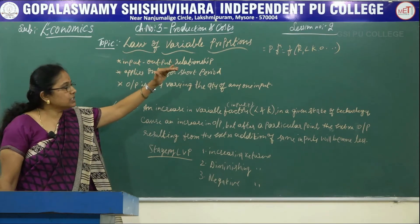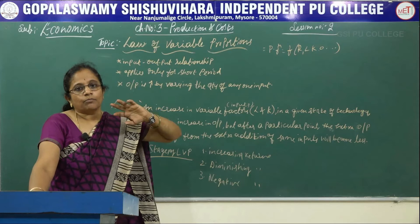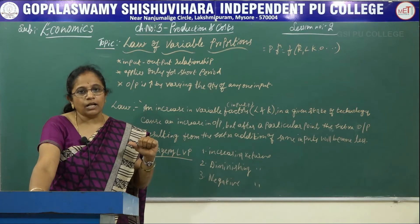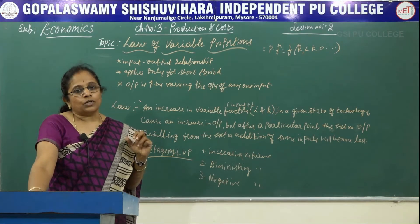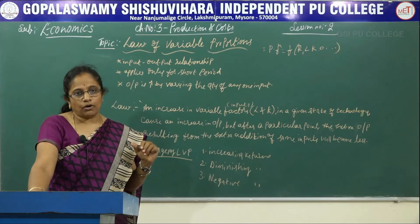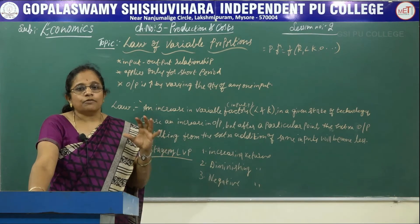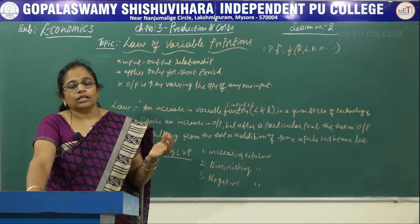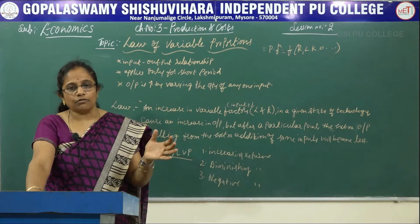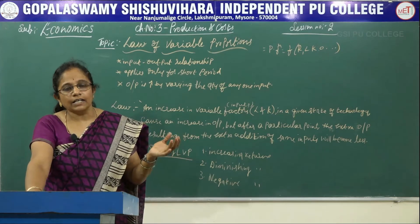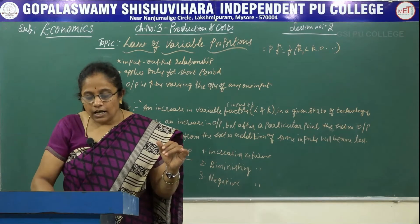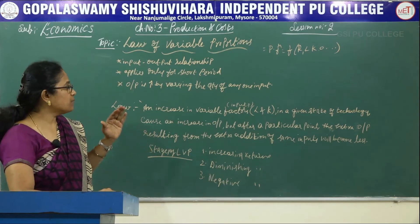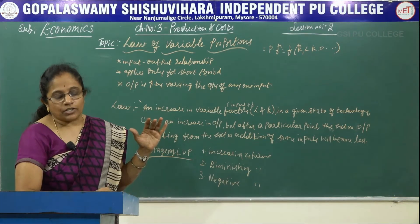In our previous session we learnt that total product, average product and marginal product are the 3 types of products available from a production unit. Total product is the aggregate of the product produced by a firm. Marginal product is the addition resulting from one more unit of a variable factor. Average product is the output produced per unit of input.